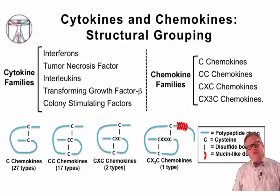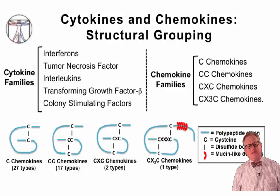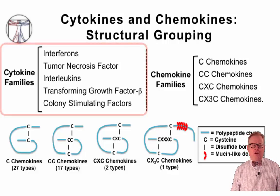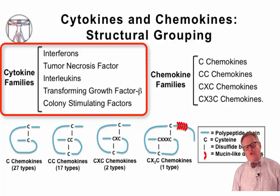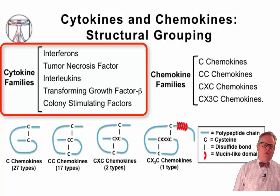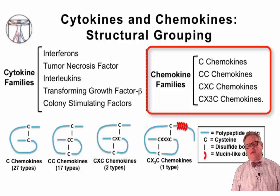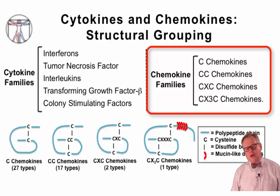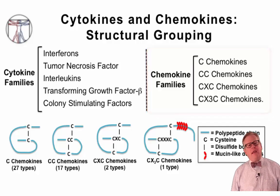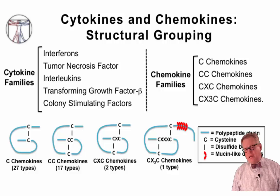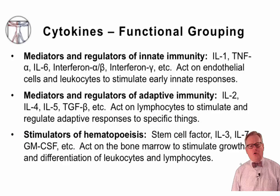There are a couple of ways to group cytokines. One way is by structural grouping. On the left-hand side are the structural groups of cytokines: interferons, tumor necrosis factor family, interleukins, transforming growth factor beta family, colony stimulating factors, etc. On the right-hand side are the chemokine families — the C, CC, CXC, and CX3C chemokines — named for their structural similarities shown at the bottom. However, it's much easier to remember them based on a functional grouping approach.